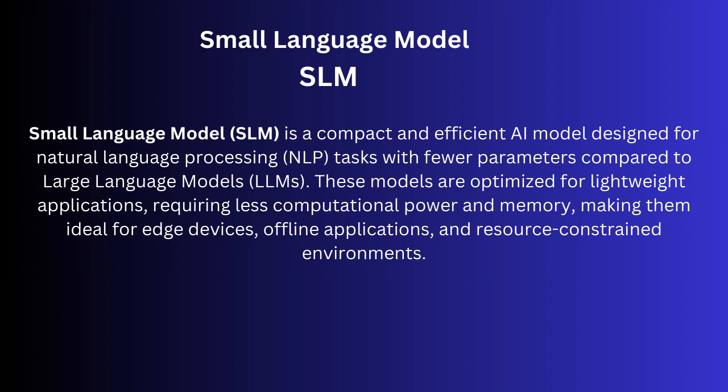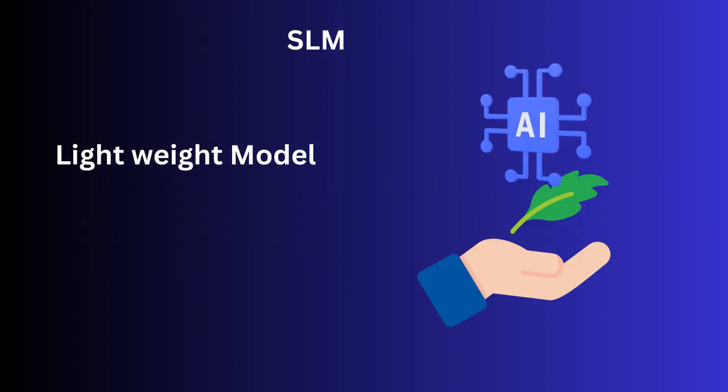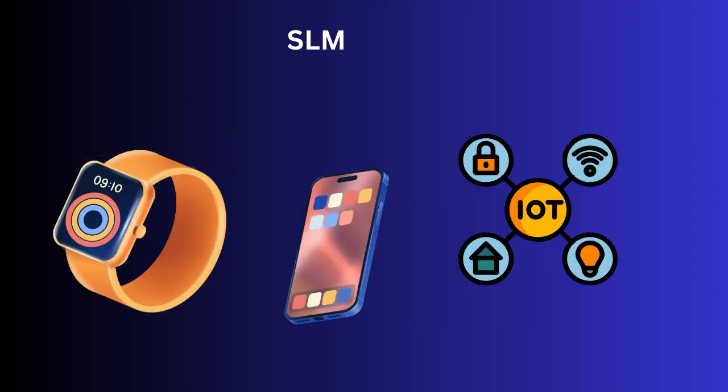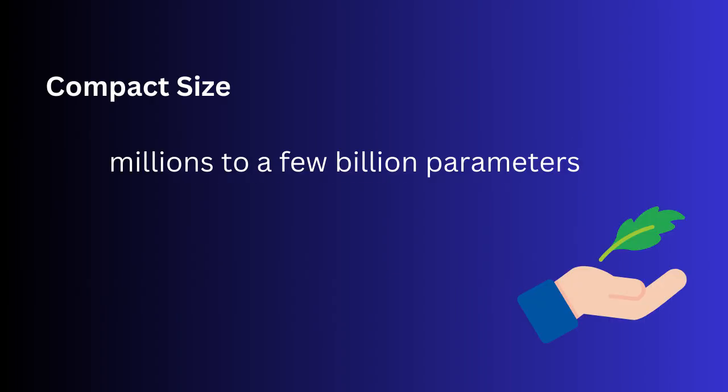A small language model, or SLM, is a compact and efficient AI model designed for natural language processing tasks with fewer parameters compared to large language models. These models are optimized for lightweight applications requiring less computational power and memory, making them ideal for edge devices, offline applications, and resource-constrained environments. The first characteristic of SLMs is their compact size — typically millions or a few billion parameters.